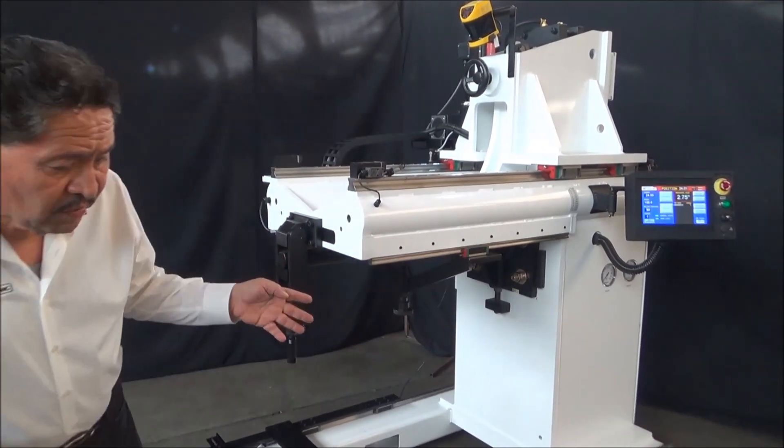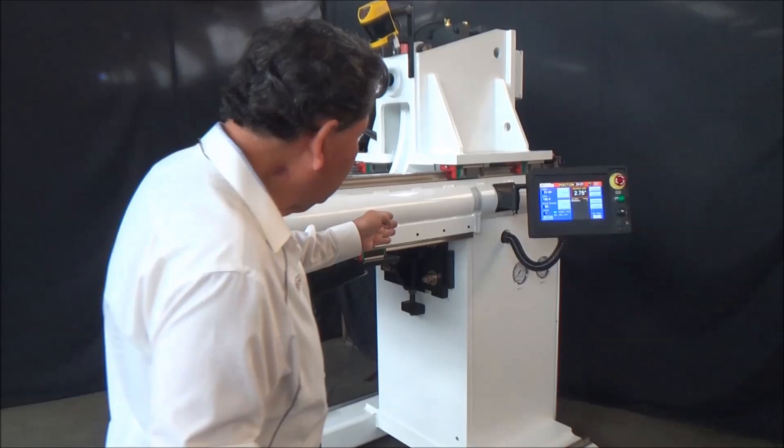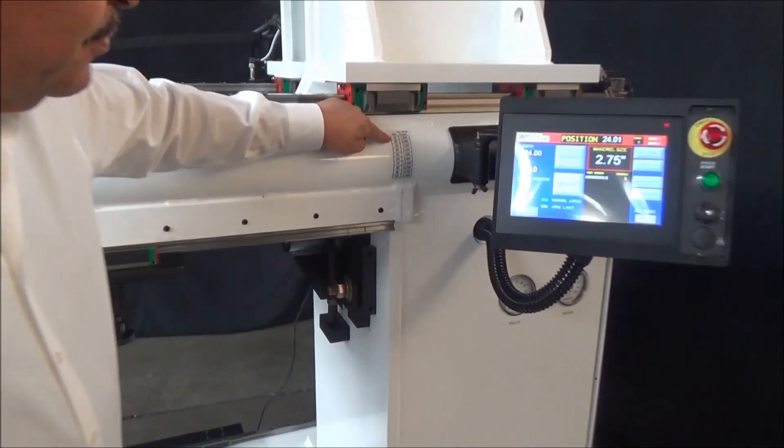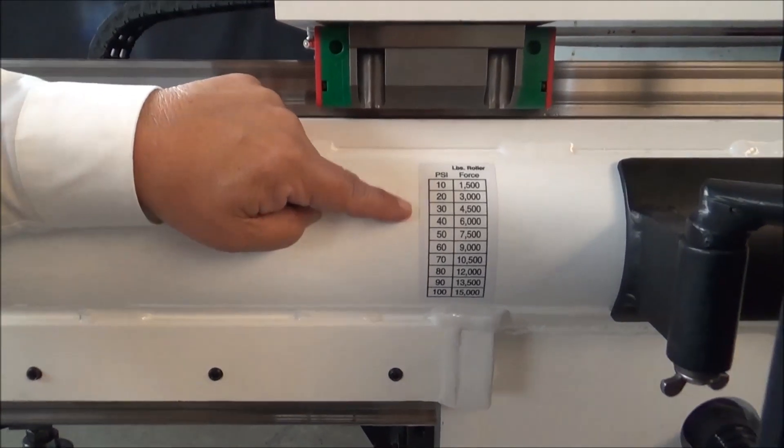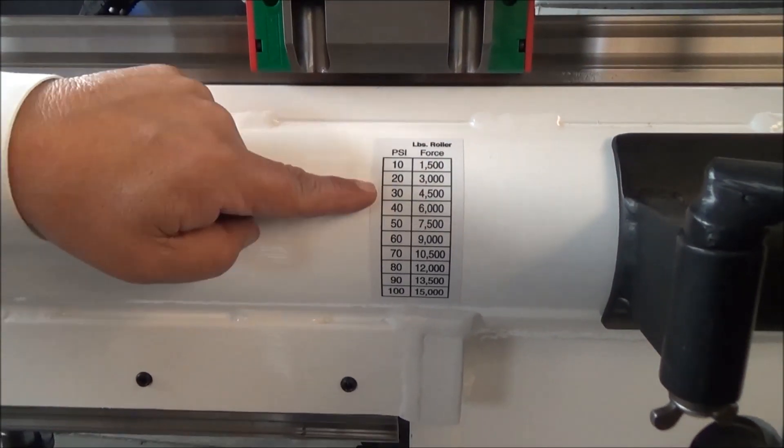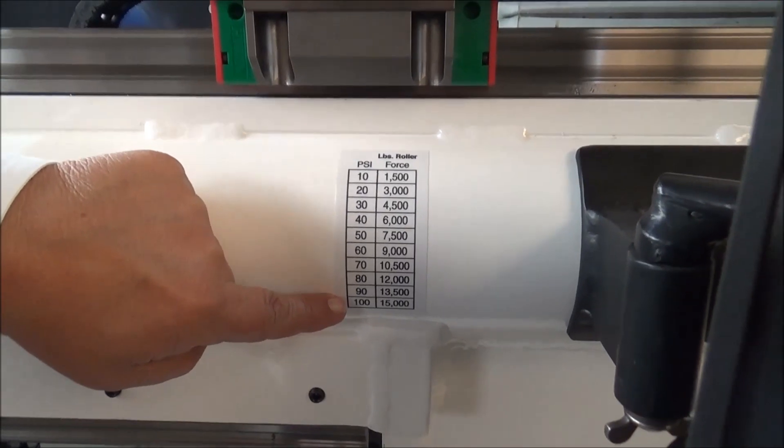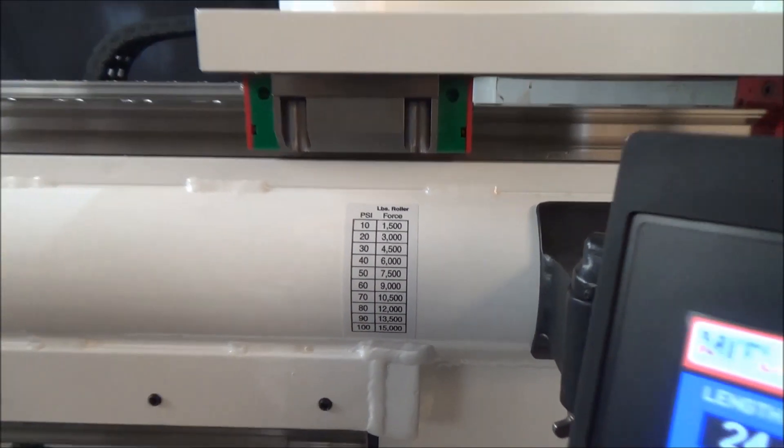We have a table here that shows you what the force is. 10 psi puts 1500 pounds of force onto the roller, 30 puts 4500 pounds, and so on up to 100 psi which gives you 15,000 pounds of force.